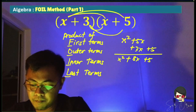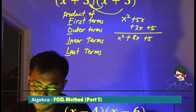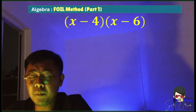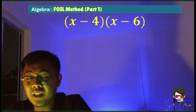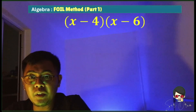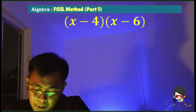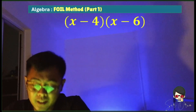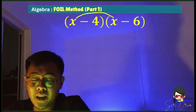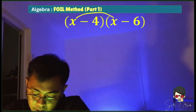So let's have another example. Number 2: what is the product of x minus 4 times the quantity of x minus 6? So using the FOIL method, we have x times x — the first term — product of x times x is x squared.